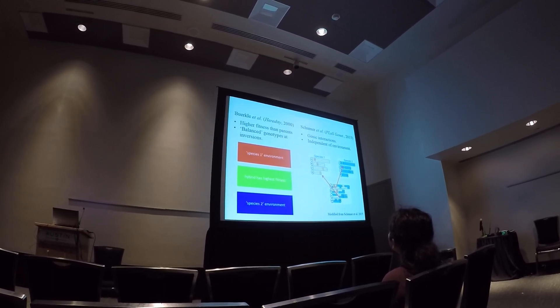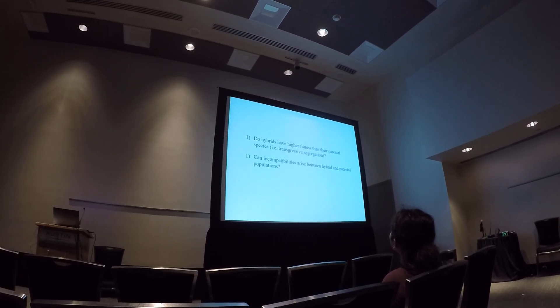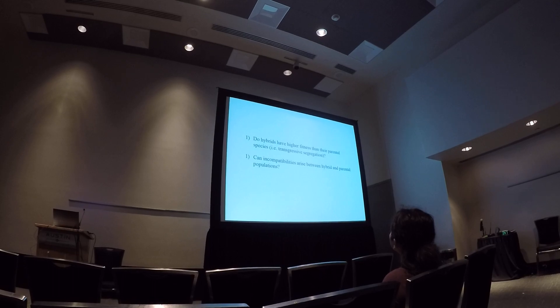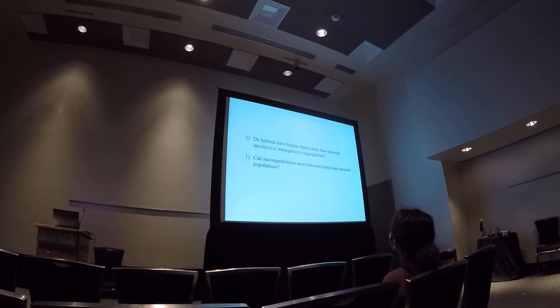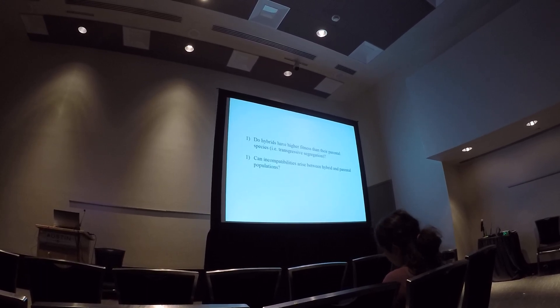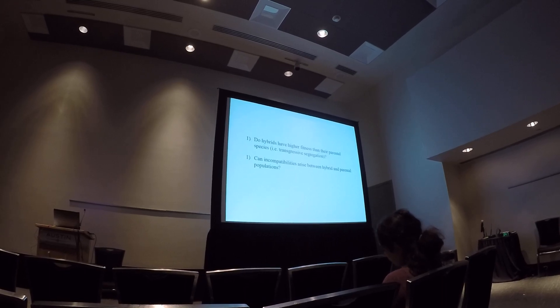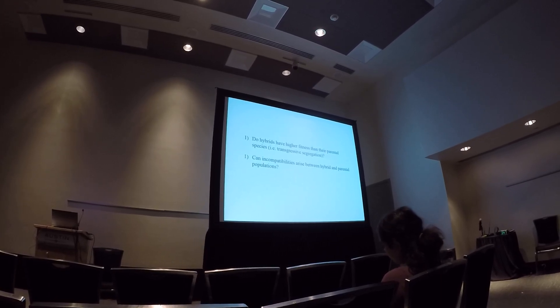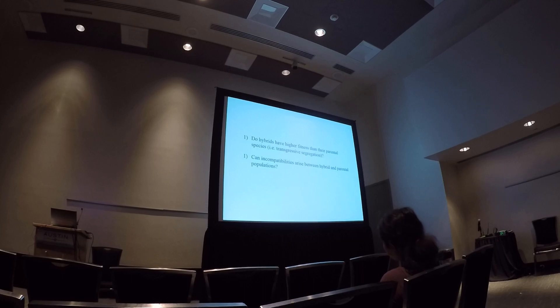And so our goal is to test some of the predictions of these models using experimental evolution. Specifically, we want to look at do we find evidence that hybrids have higher fitness in a novel environment than their parental species do? Can they adapt more rapidly to that environment than parental species? And then secondly, can we see any reproductive isolation or incompatibilities arising between the hybrid populations and their parental populations?